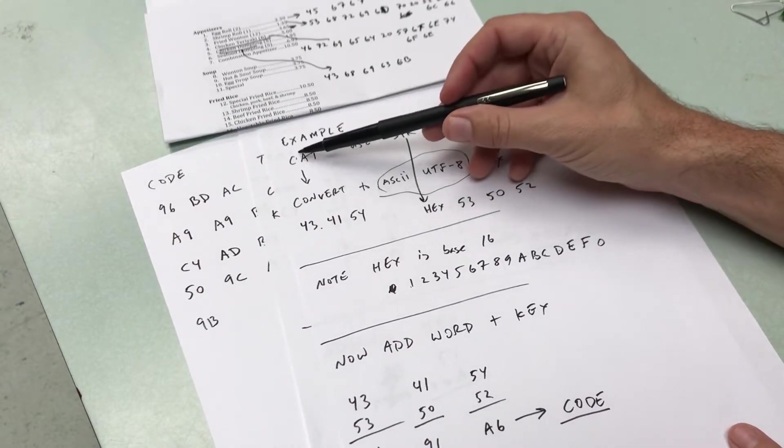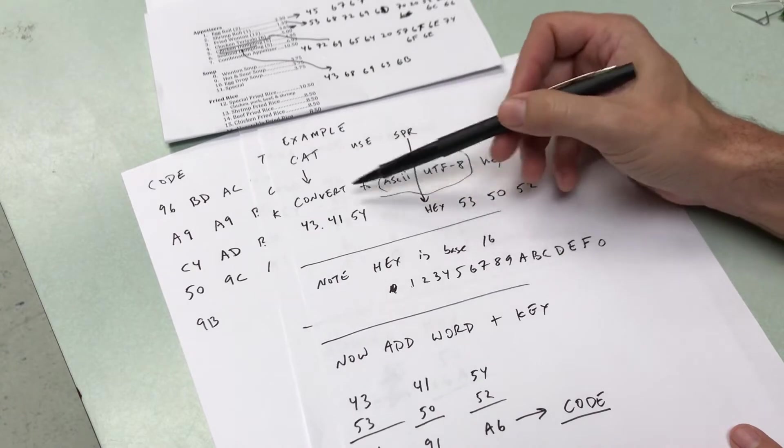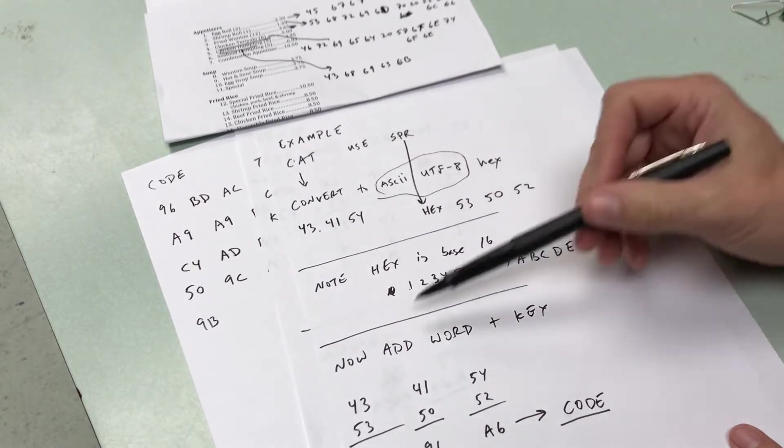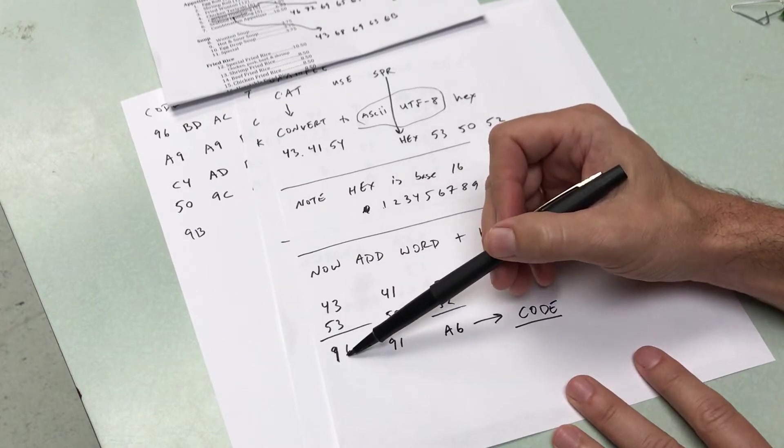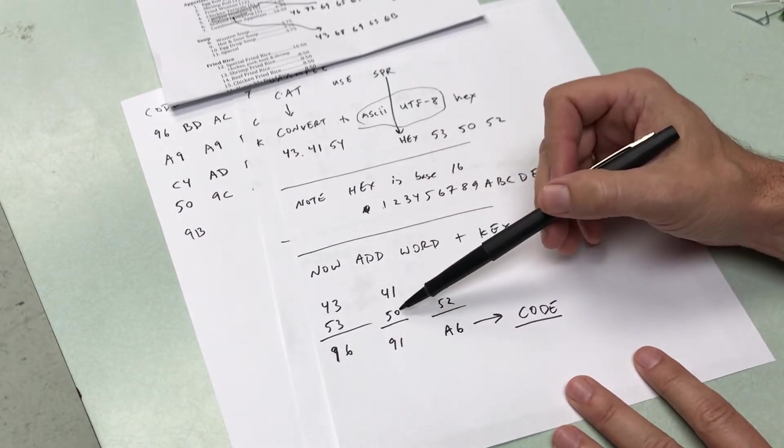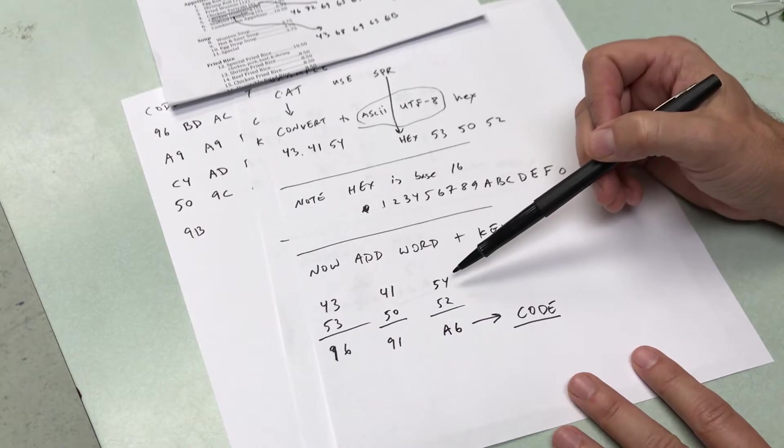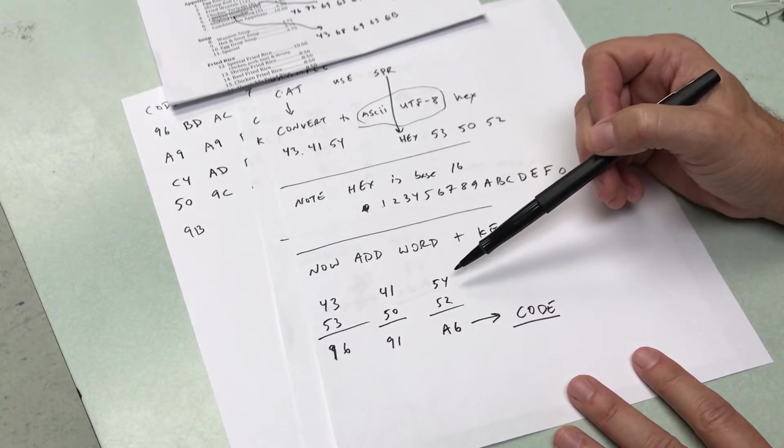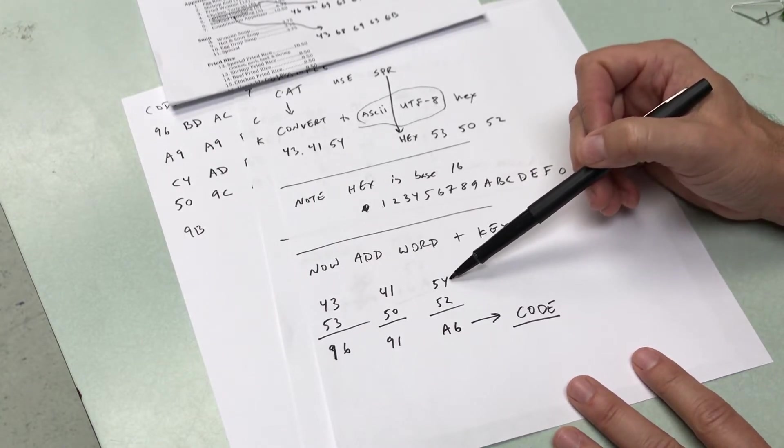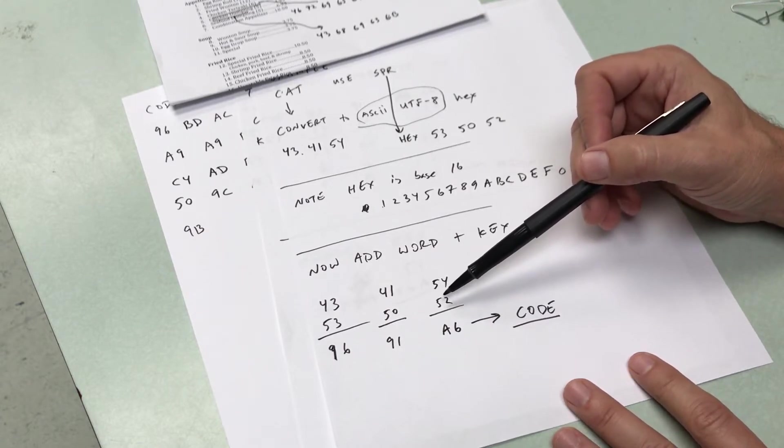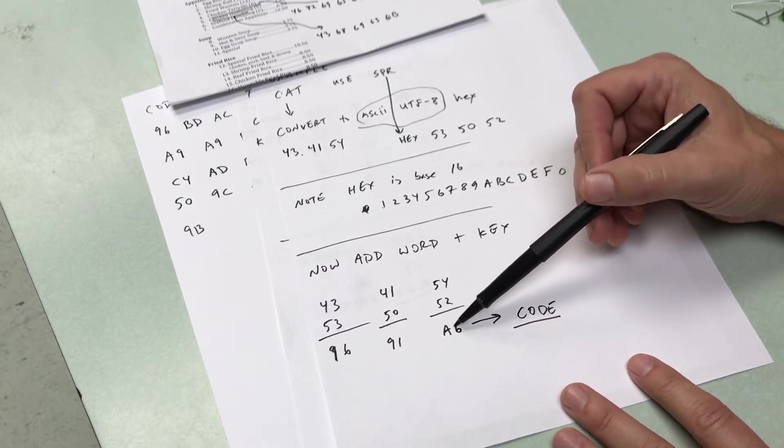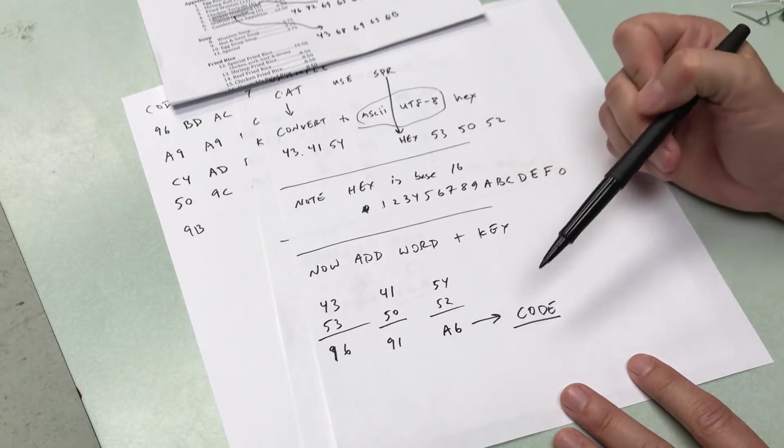So now I'm going to take the code plus the key, add them together. It's like 43 plus 53, right down here. So that's 96. That's easy. 41 plus 50, 91. Here's where you can see that it's in hex. So 4 plus 2 is 6, but 5 plus 5 is 10. So I don't write 10, I write A. So it's A6. So that's my code.